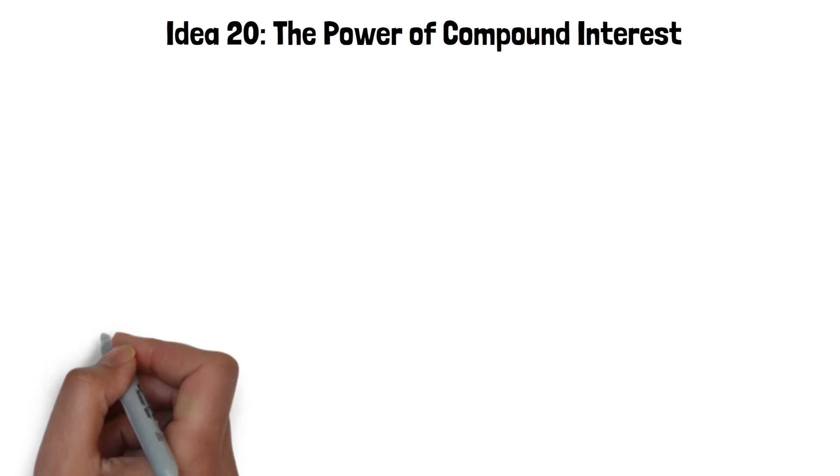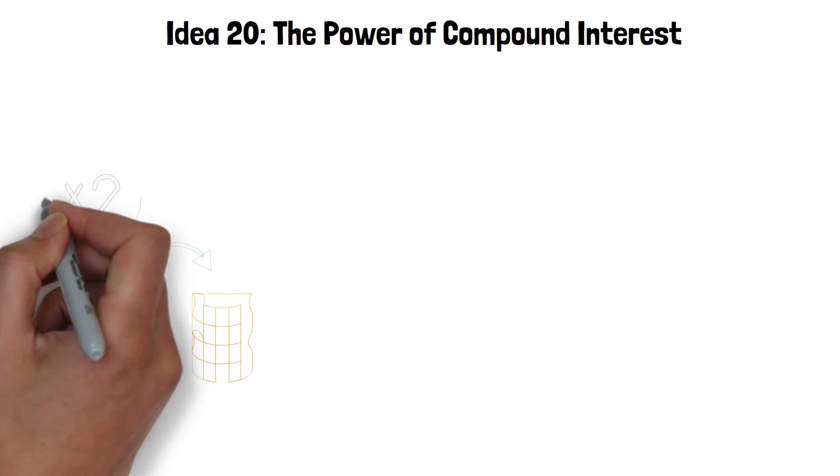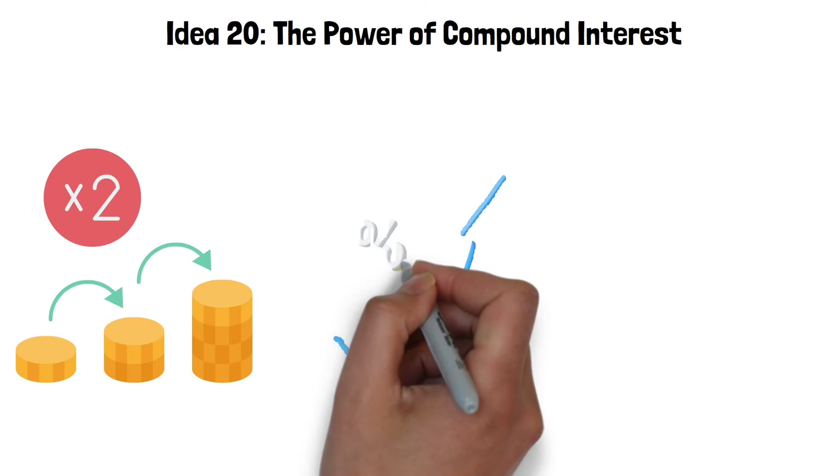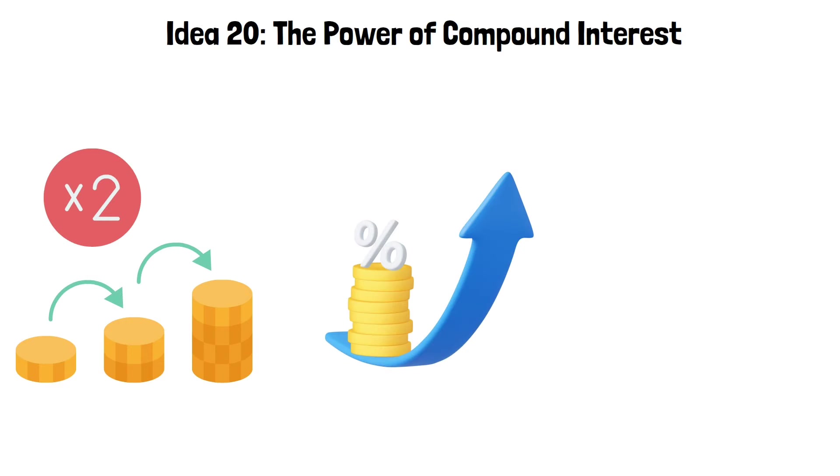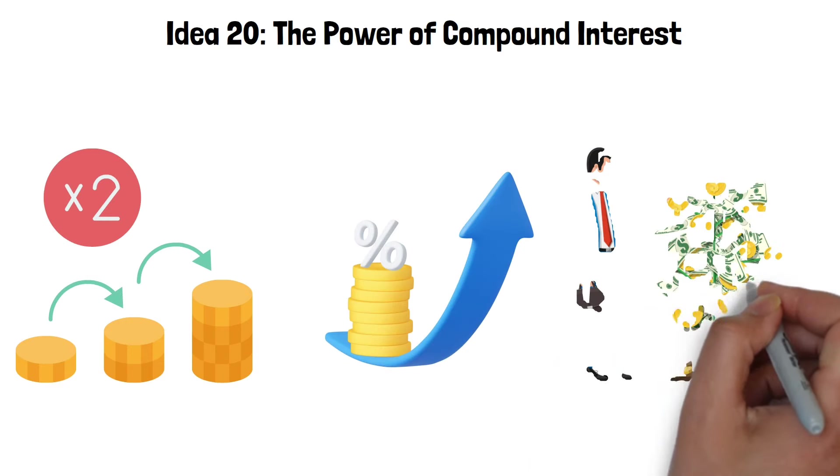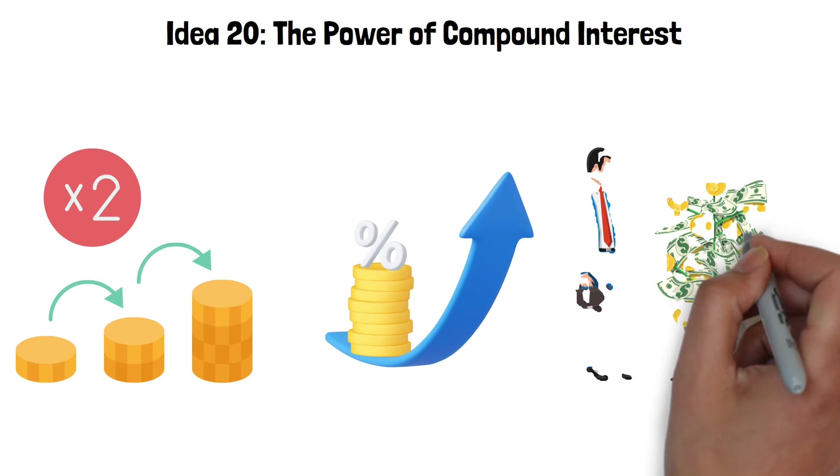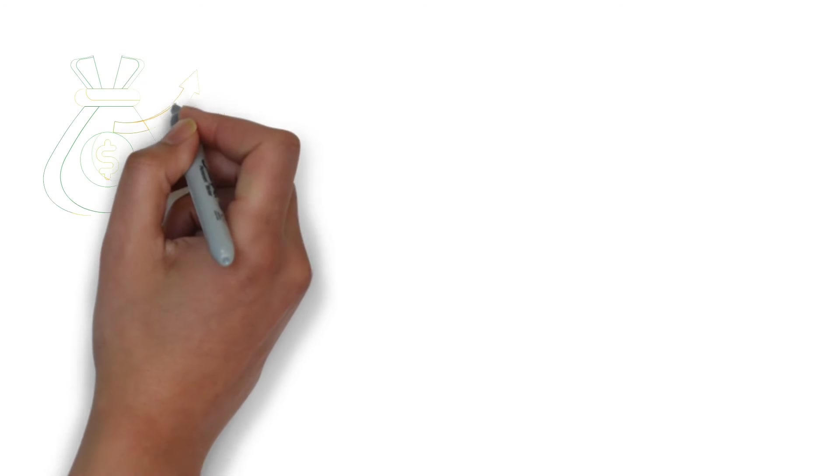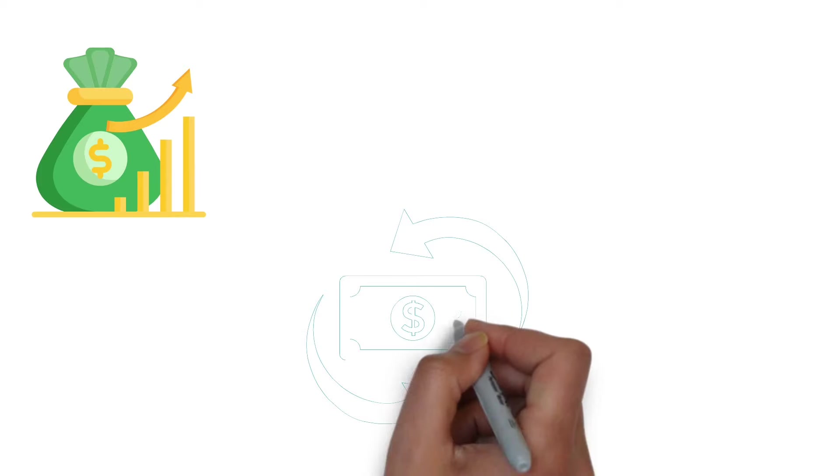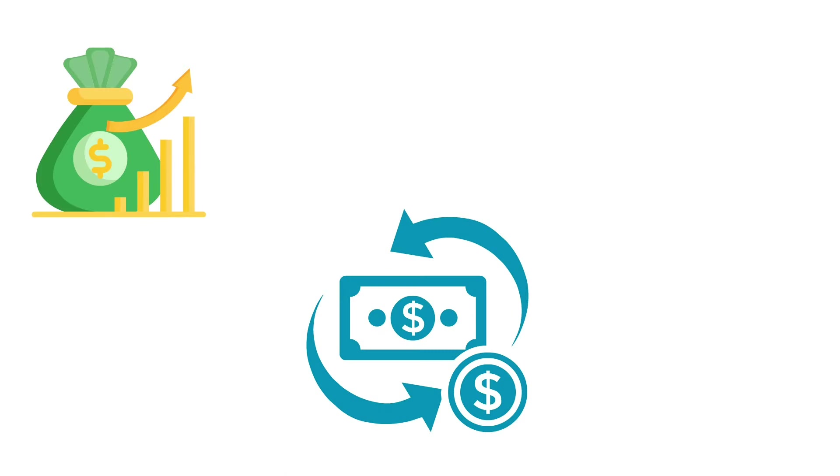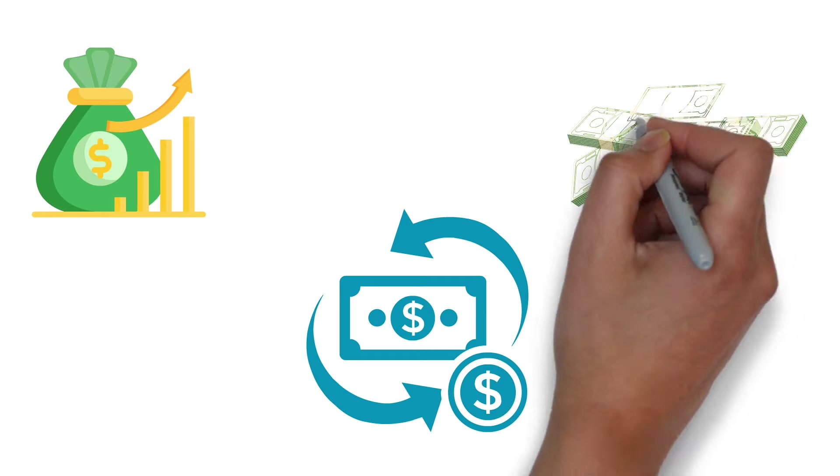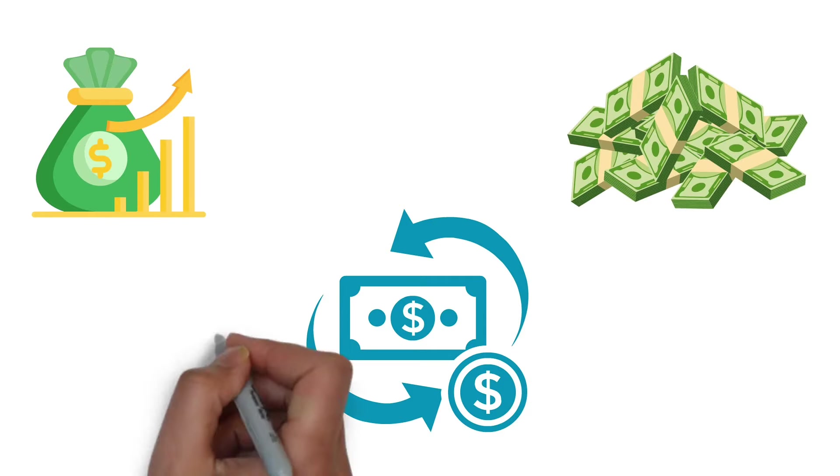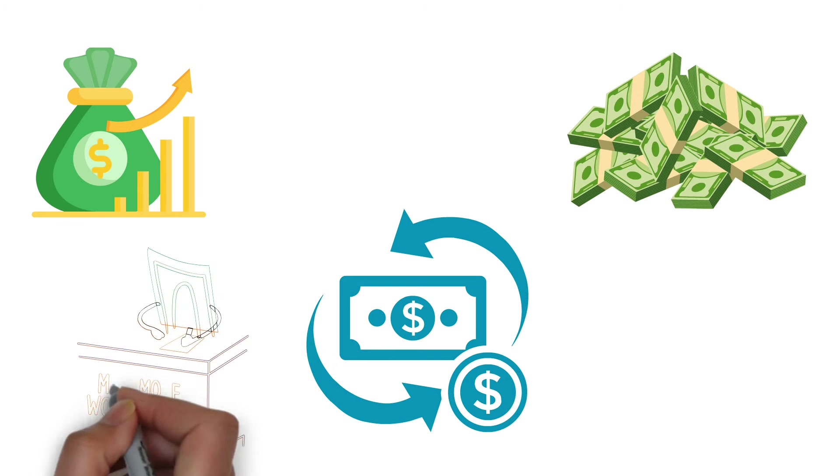Idea 20: Power of compound interest. The power of compound interest is often described as one of the wonders of the financial world. It's the process where the money you've saved and invested earns interest, and then that interest starts earning interest on itself. Over time, this can lead to your money growing at an accelerating rate. To put it simply, when you invest money, you receive returns on your initial amount. When these returns are reinvested, they too start to earn returns. This cycle continues, with the money piling up not just from your original investment, but also from the ongoing growth of the investment's returns.